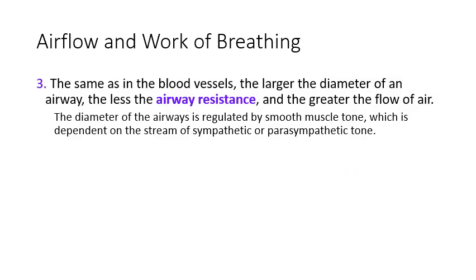The last factor contributing to the work of breathing is airway resistance. As we get into smaller bronchi and bronchioles, we transition from cartilage to smooth muscle, and that smooth muscle is controlled by the autonomic nervous system. Sympathetic and parasympathetic tone control whether those airways are dilated or constricted: sympathetic tone will widen the airways and reduce resistance, while parasympathetic tone will constrict the airways and increase resistance.